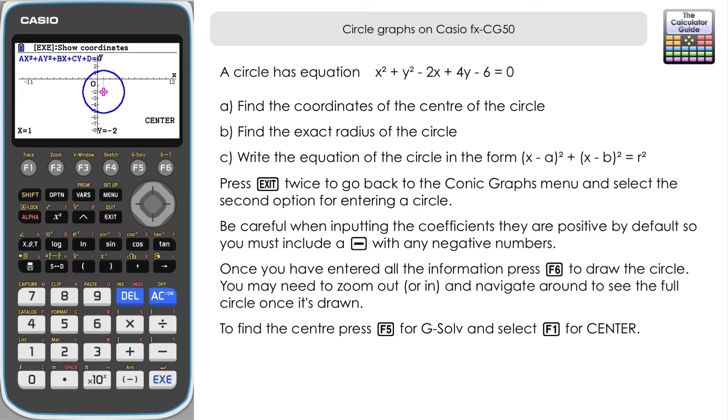So then we need to find the exact radius of the circle. So we can find the radius by pressing F5 for G solve again and then F2 for radius. And you can see that the radius is given here 3.3166. It's not given as an exact answer. It's given as a decimal approximation for the answer there. But when we get certain answers for the radius, we can actually see if we can find out what that might be as an exact answer by going into the run matrix mode.